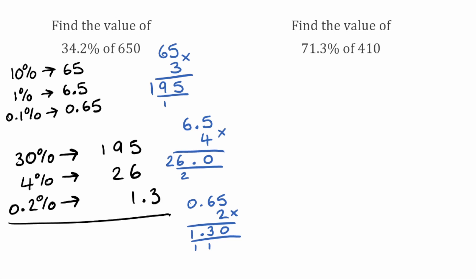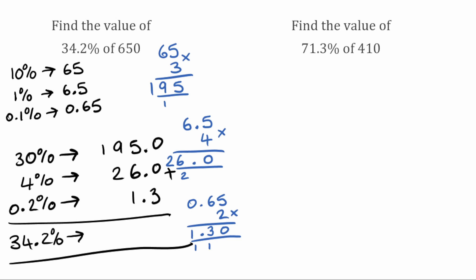Now we add all our columns together to find our 34.2%. I'm going to put everything to one decimal place to line these up. Starting from the right: 0 add 0 add 3 is 3; 5 add 6 add 1 is 12, so 2 carry 1; 9 add 2 add 1 is 12, so 2 carry 1; 1 add the carried 1 gives us 2. So 34.2% of 650 is equal to 222.3.